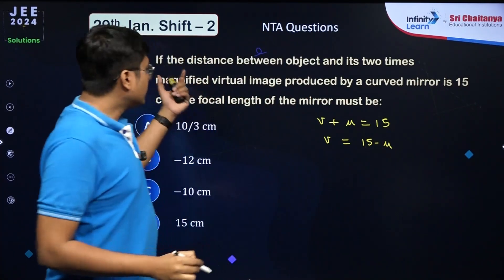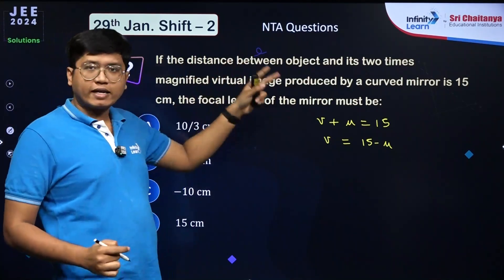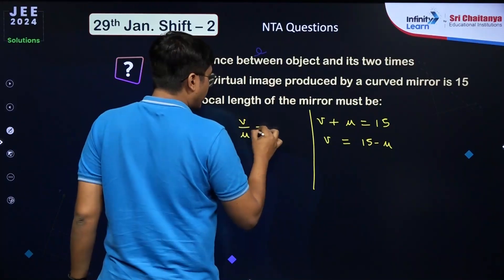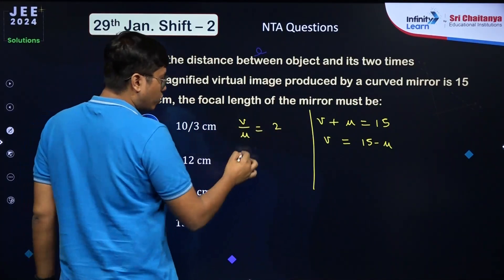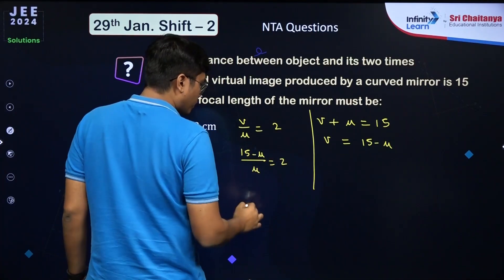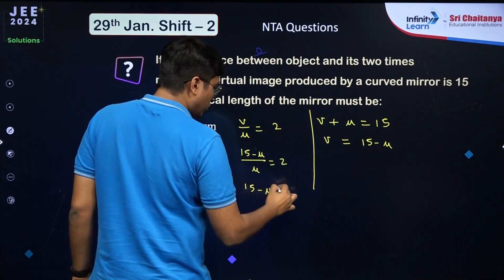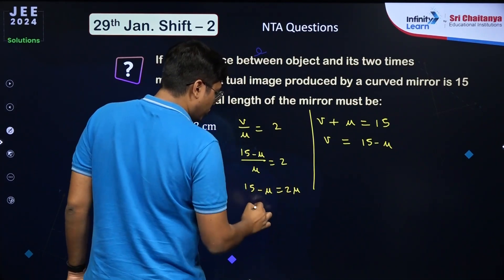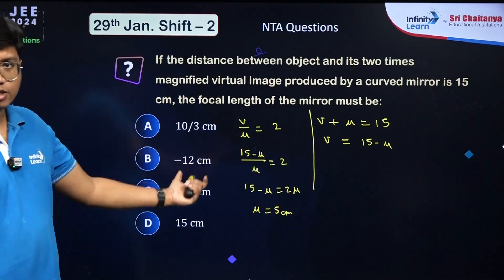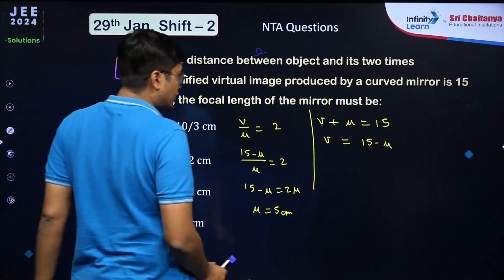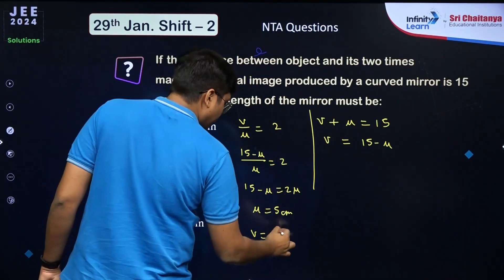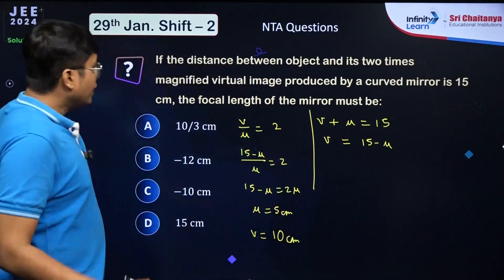The image is two times magnified, so the magnification v/u = 2. Replacing v: (15 − u)/u = 2, giving 15 − u = 2u, so u = 5 cm. Then v = 2u = 10 cm.